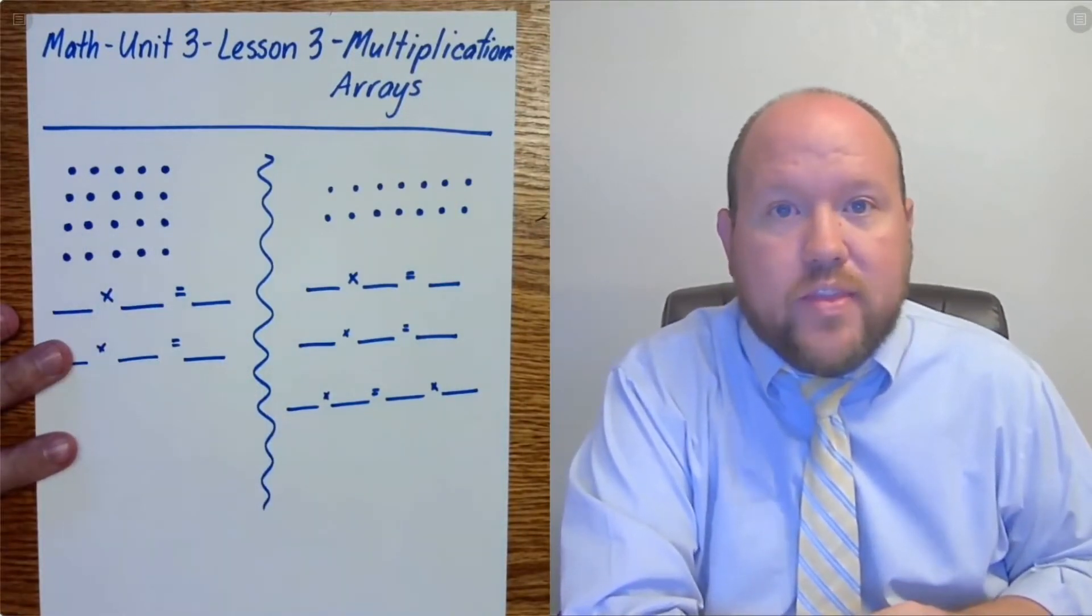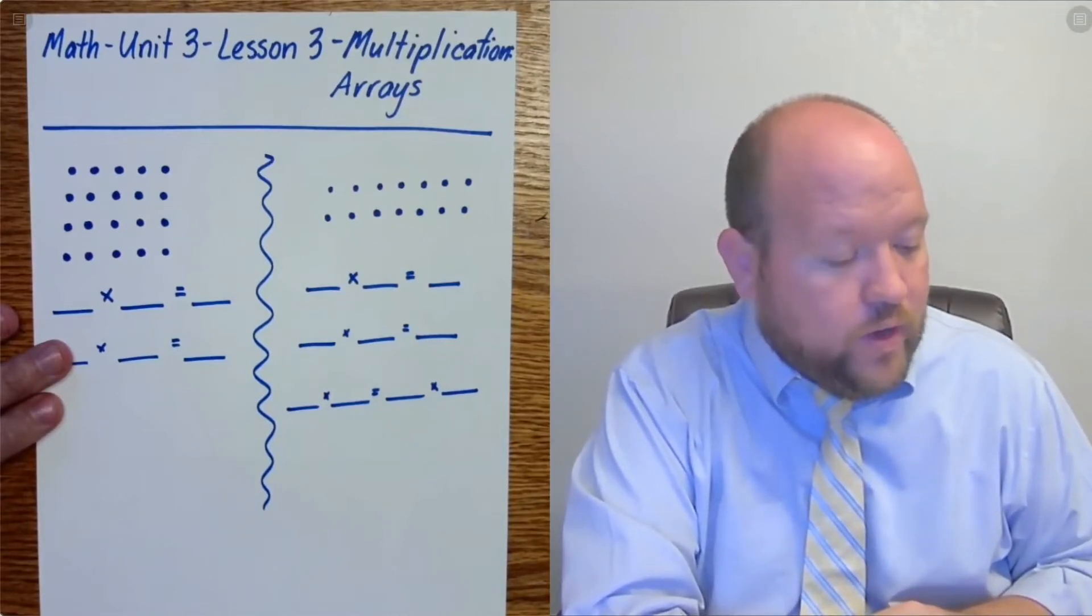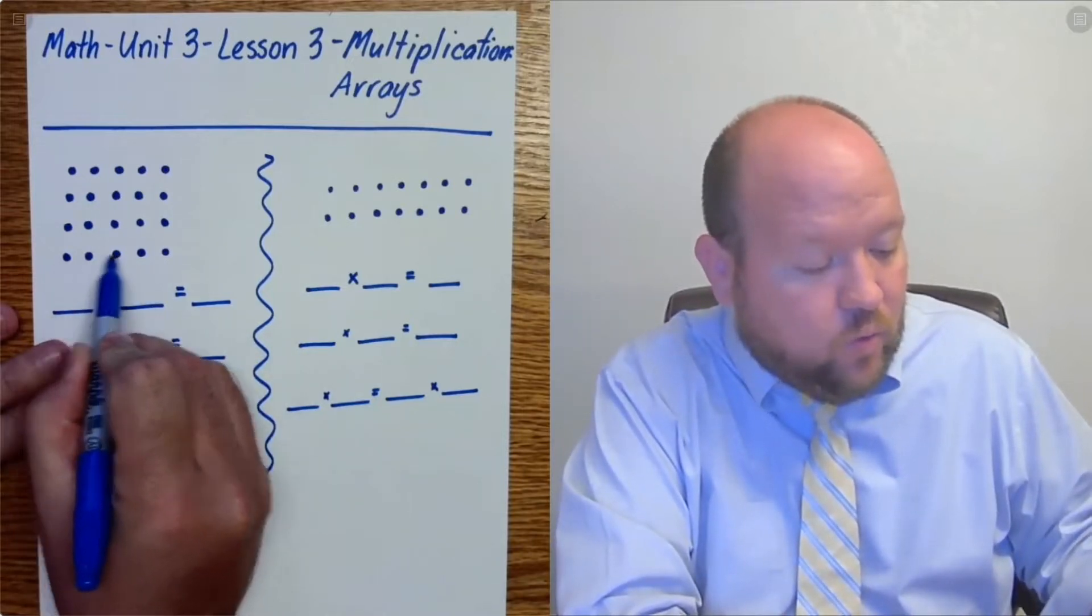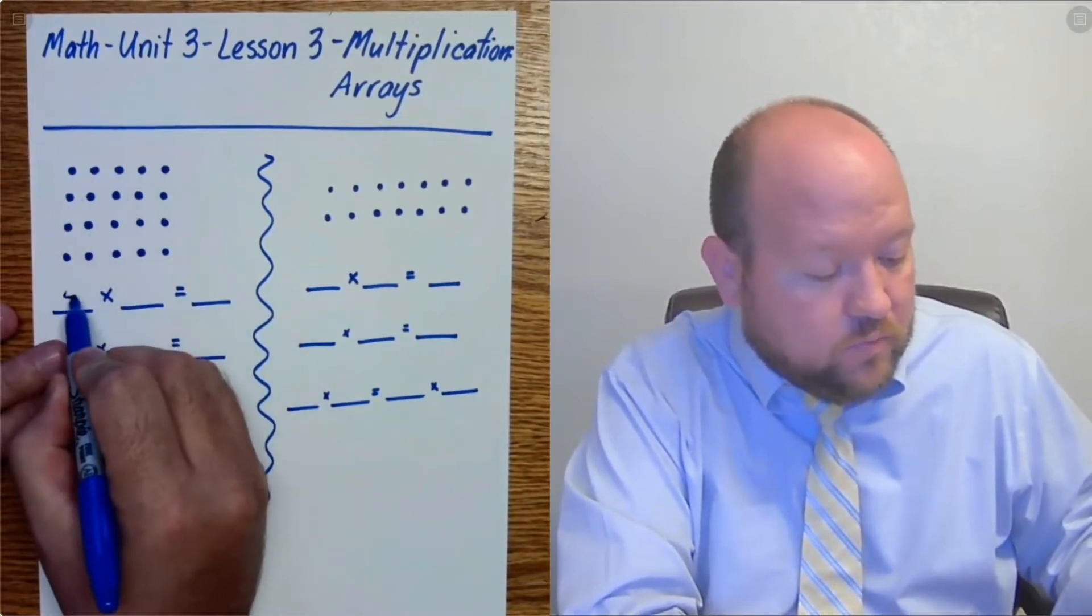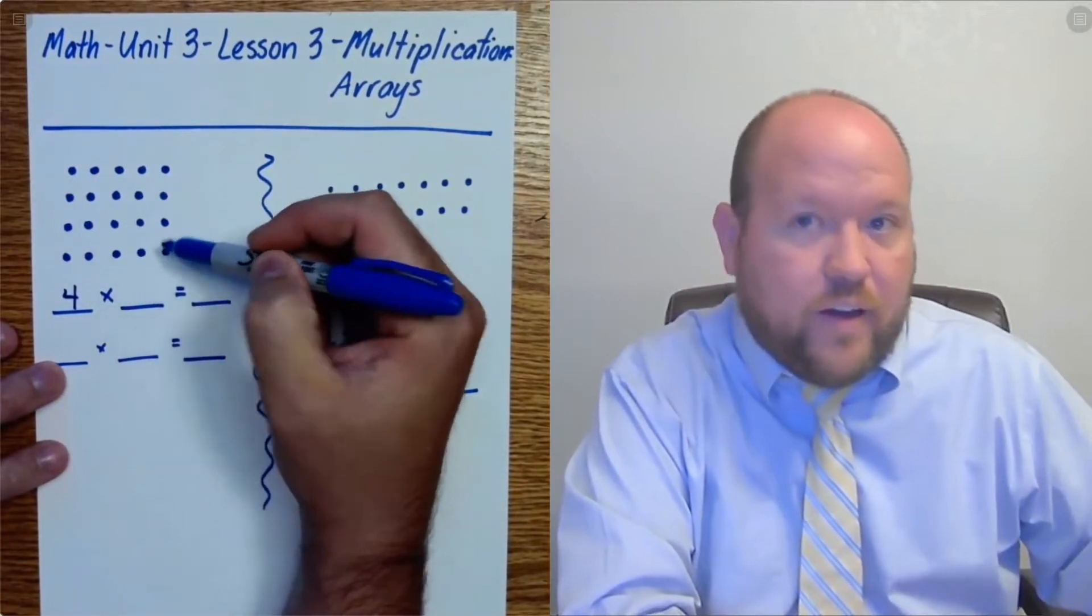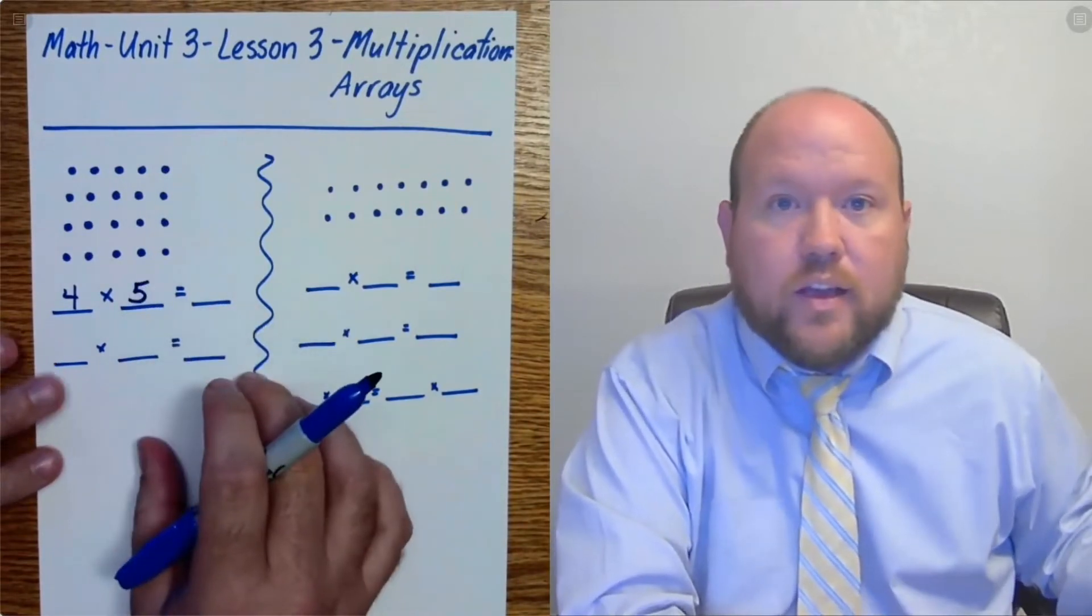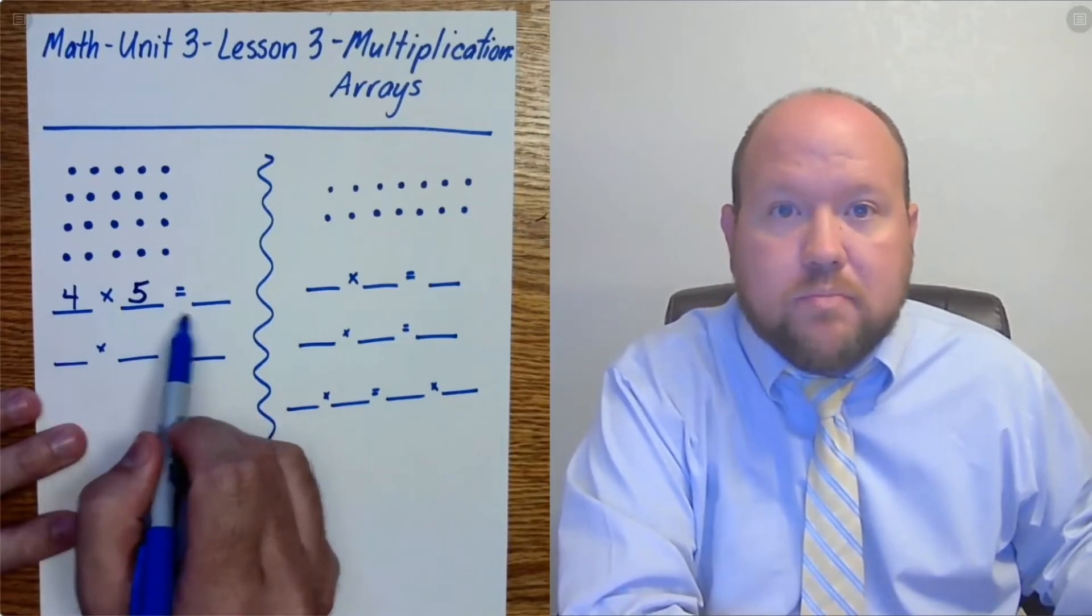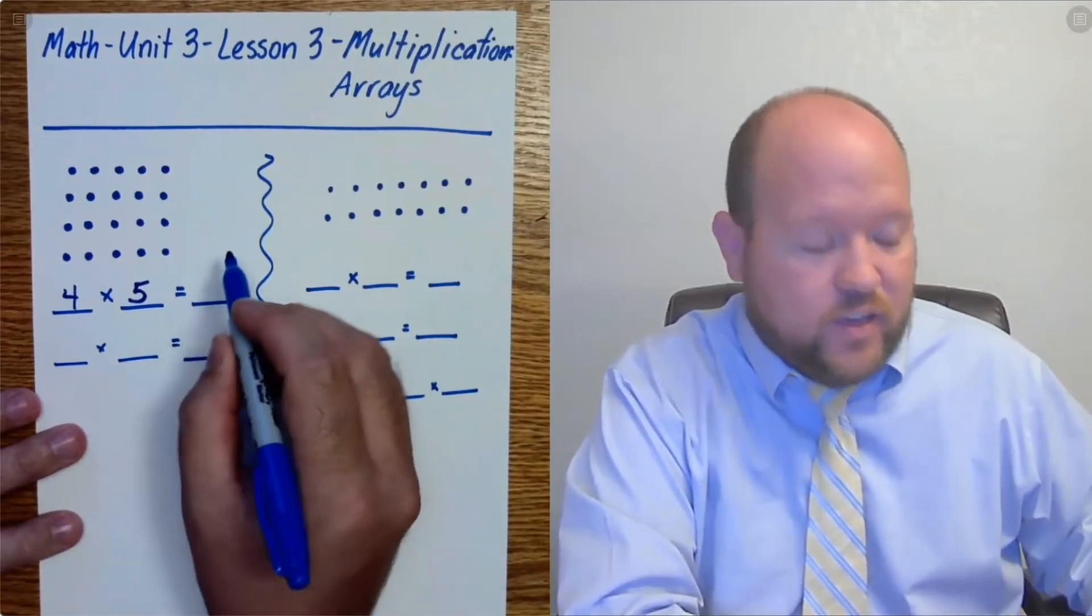So how would we understand this as a multiplication problem? Well, we can do this one of two ways. One, we can break it into rows. So I have one, two, three, four rows, and there are one, two, three, four, five in each one of those rows. Now, four times five equals what? So hopefully we're moving towards memorizing our math facts and we'll know that this answer is 20.